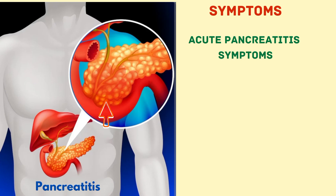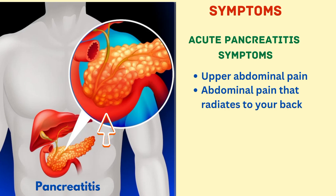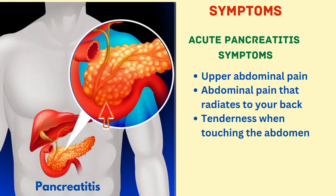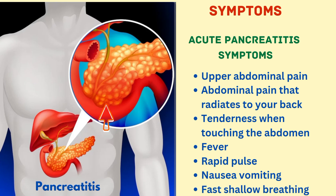Now let us see the symptoms of acute pancreatitis. They are: upper abdominal pain, abdominal pain that radiates to your back, tenderness when touching the abdomen, fever, rapid pulse, nausea, vomiting, and fast shallow breathing.